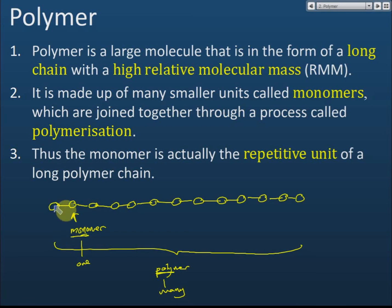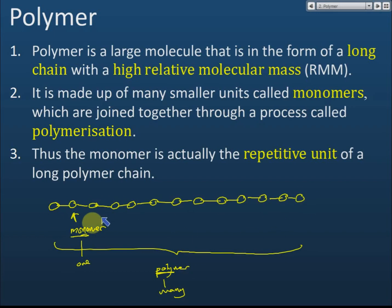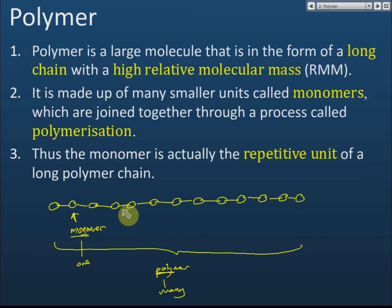Each single unit is called a monomer, and when we join all the monomers together, the resulting long-chain molecule is called a polymer. The process that joins all these monomers together to form a polymer is called polymerization.